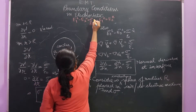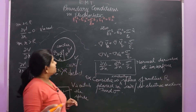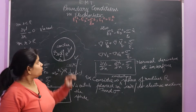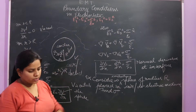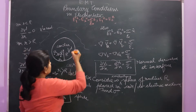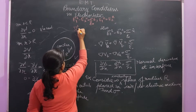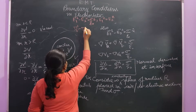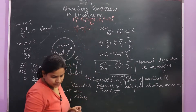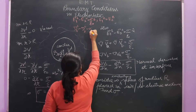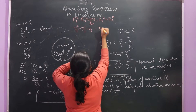According to the boundary conditions, taking only magnitudes: E1 minus E2 equals σ/ε₀. Also, d1 perpendicular minus d2 perpendicular equals σ_f, and d1 parallel equals d2 parallel.